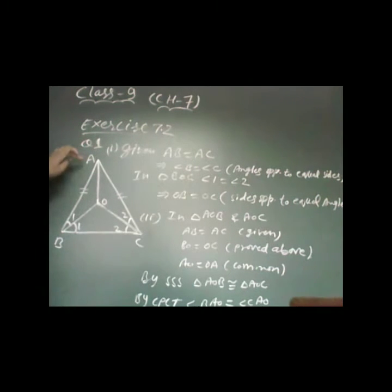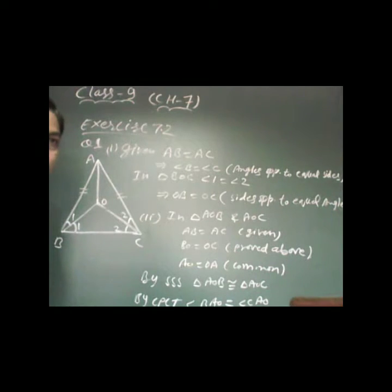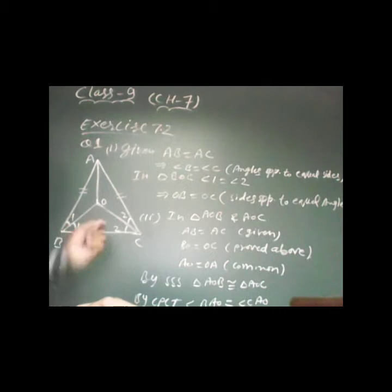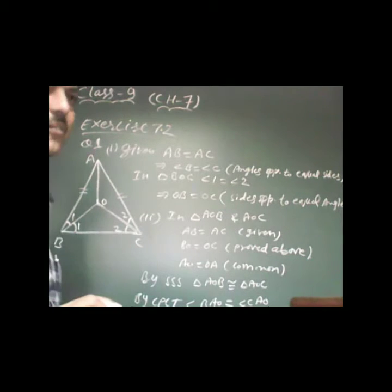In the very first question, in triangle ABC, AB is equal to AC is given, and the bisector of angle B and bisector of angle C meet at point O. We need to prove OB is equal to OC, and in the second part, AO is a bisector of angle A.